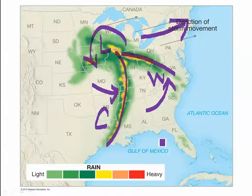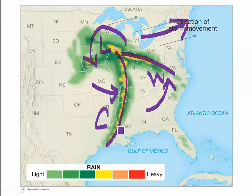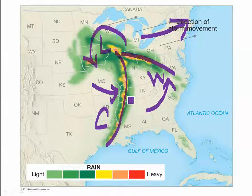So let's think about some questions. Which states are likely going to experience thunderstorms associated with the cold front in the next 6 to 12 hours? Well, this cold front here — remember, cold fronts are steeper and they move faster, and they are going to produce more severe weather and thunderstorms.